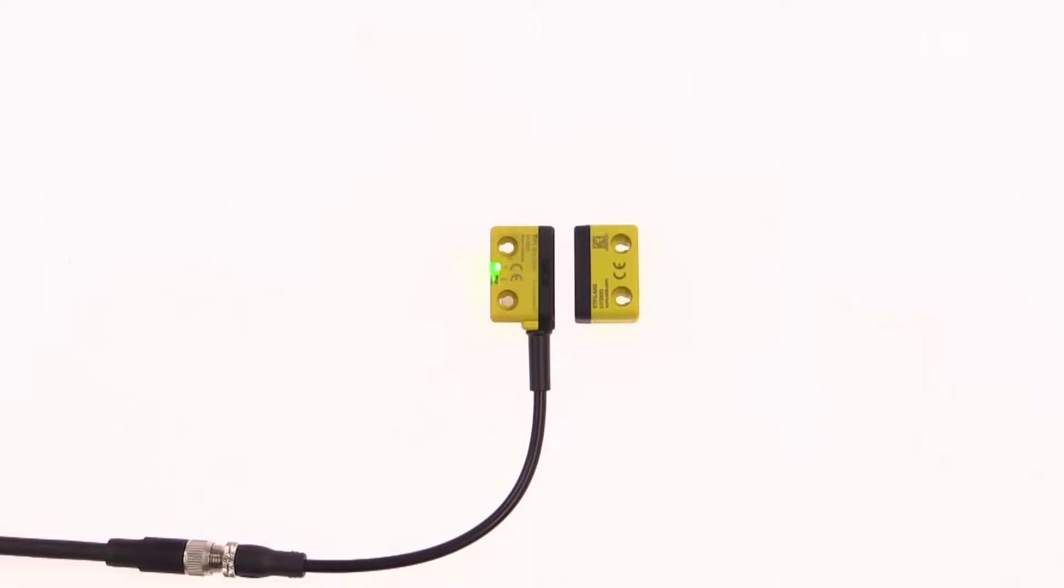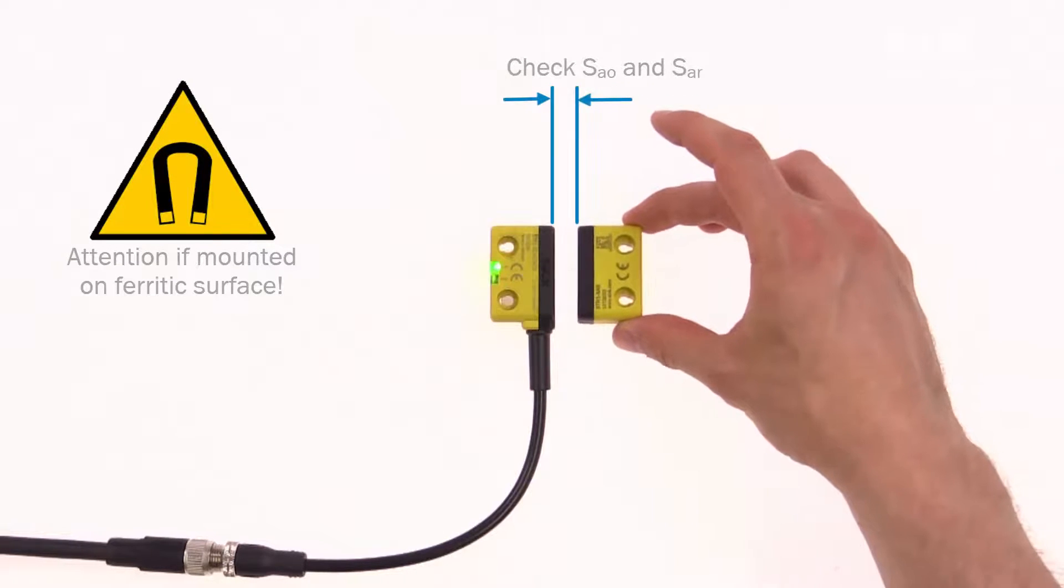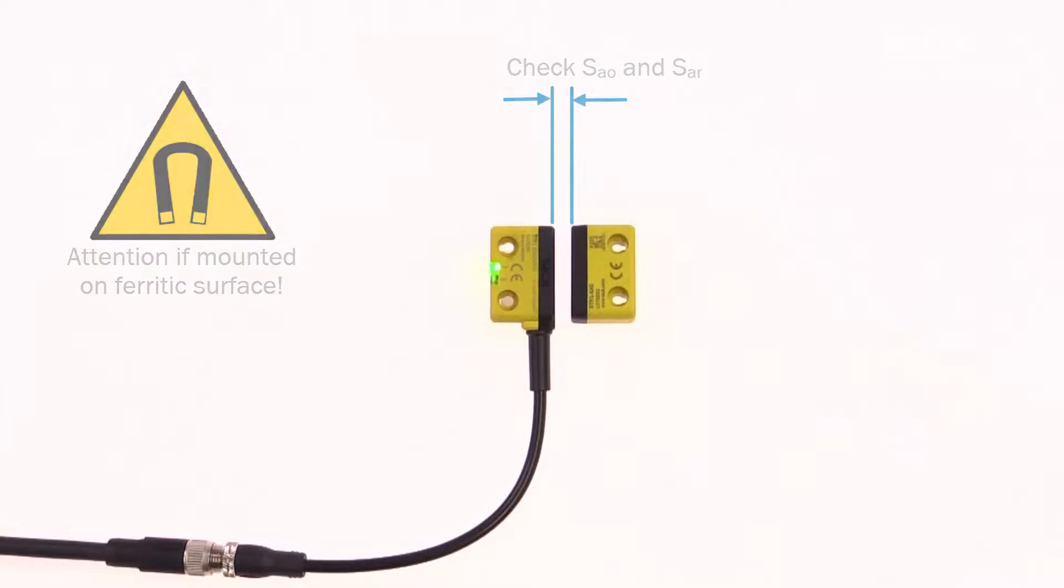The STR1 should be mounted on a non-ferridic surface. If that cannot be assured, the operating range may be affected and the switching distance must be verified before use.